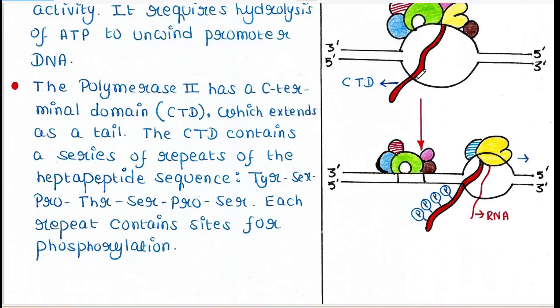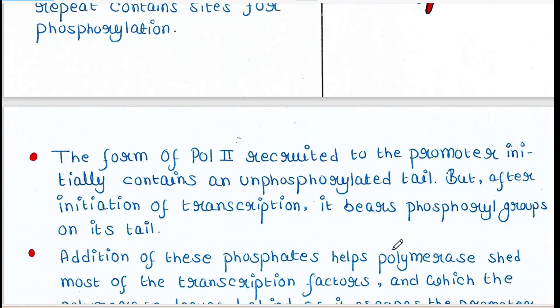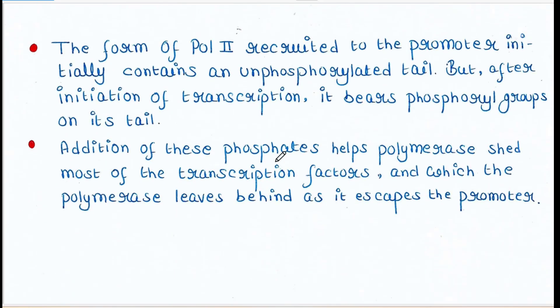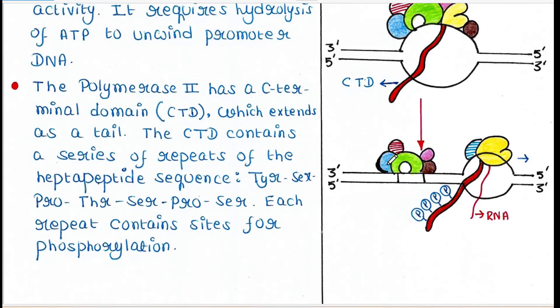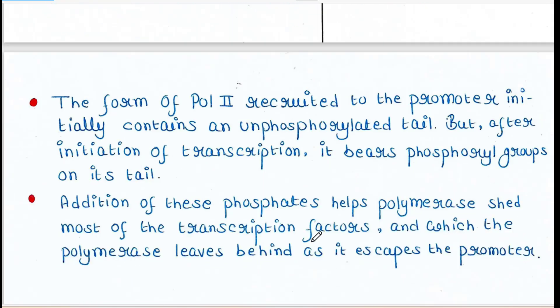Initially the tail was unphosphorylated. Once transcription begins, the tail becomes phosphorylated. Addition of these phosphates helps polymerase shed most of the transcription factors, which the polymerase leaves behind as it escapes the promoter.